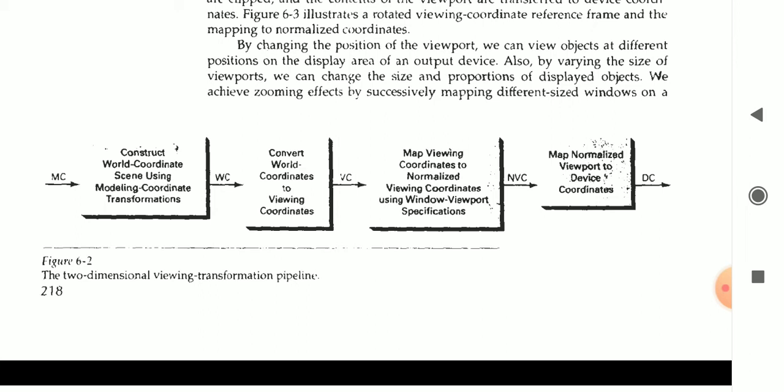After normalized view coordinate, NVC, we are converting to device coordinate. Assume that the output is displayed on a computer, on a mobile screen. According to the device coordinate, it should be mapped, that is DC. This is one important question. Two-dimensional viewing transformation pipeline.